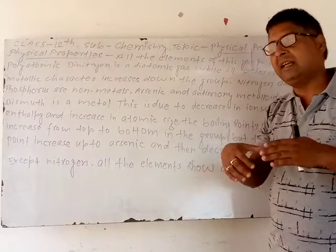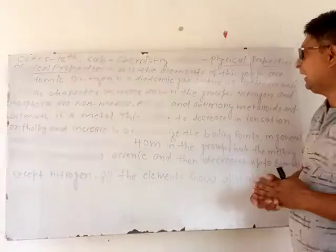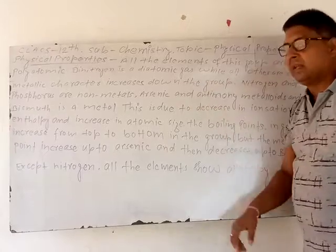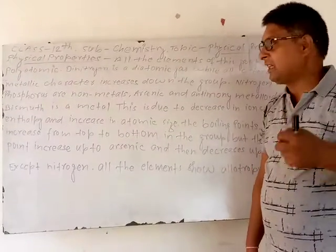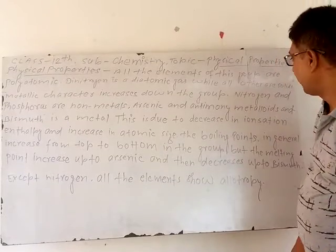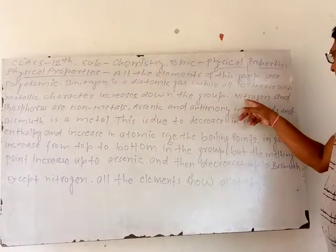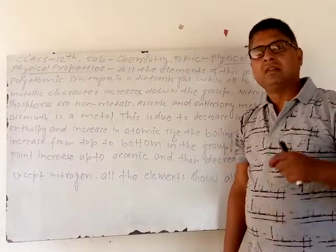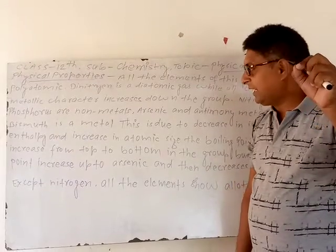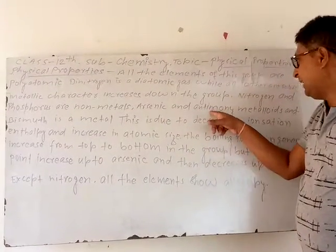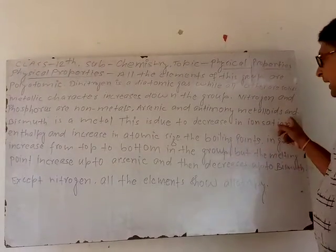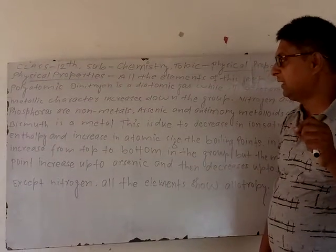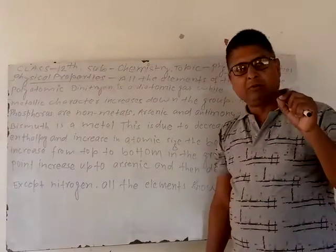All the elements of Group 15 are polyatomic. All others — phosphorus, arsenic, antimony, and bismuth — are solids. Metallic character increases down the group, that is, from top to bottom in Group 15, metallic character increases. Nitrogen and phosphorus are non-metals.